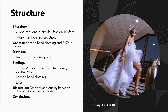The structure of the presentation is: first, a brief presentation of the associated literature, focusing on global tensions in circular fashion in Africa and drawing on the theoretical perspective of more than local approaches to sustainable fashion. We then provide context on the secondhand clothing market and export processing zones (EPZs) in Kenya. I then introduce the methods and our research with fashion designers based in Nairobi, before presenting findings focusing on three key areas: circular traditions and contemporary adaptations, their relationship with secondhand clothing, and their relationship with EPZs. The final discussion highlights the tensions and duality between global and local circular fashion economy dynamics.